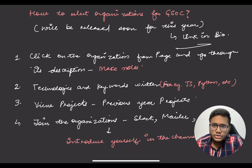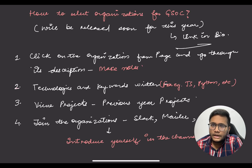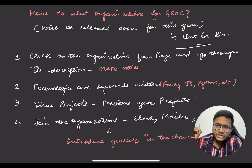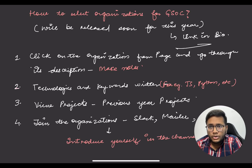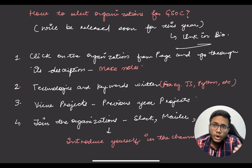There are hundreds of organizations that participate in GSOC every year. Click the link to the organization page, go through the description, and take notes on what each organization does. Look at the technologies and keywords listed on the side — whether the organization works with Ruby on Rails, Go, C++, JavaScript, or Python. If you already have exposure in one of those tech stacks, you're good to go. Shortlist five to seven organizations based on your favorable tech stack.